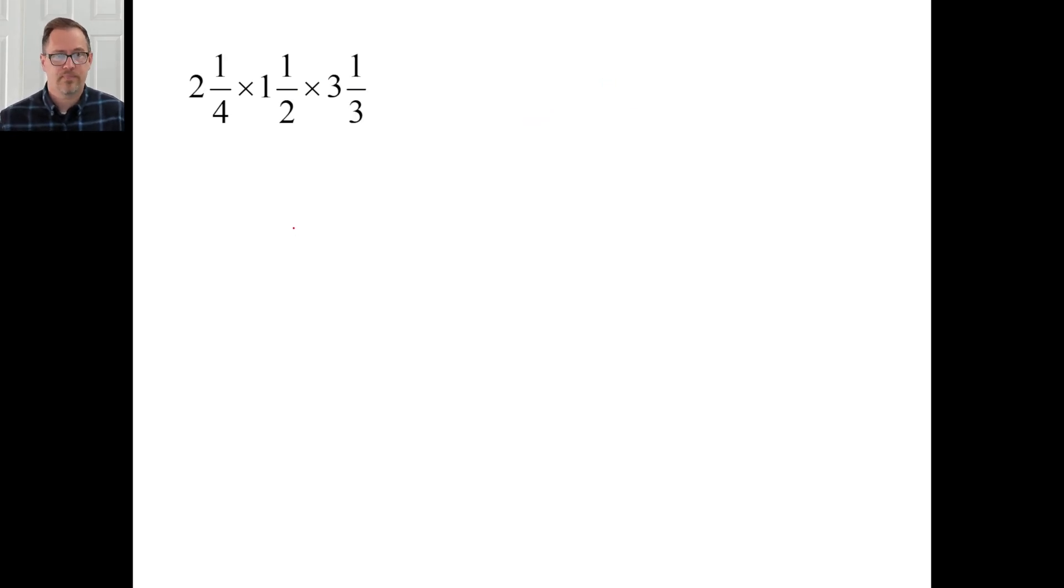Pause it and try B. Okay. Let's try it again. Let's just, for the heck of it. 2 times 1 1/2 is about 3. 3 times 3 1/3 is about 9, 10, 10-ish. Our answer should be somewhere around 10, right? So let's rewrite. 9/4 times 1 1/2, that's 3/2, times 3 1/3, 10/3.